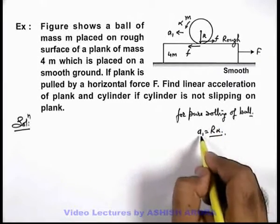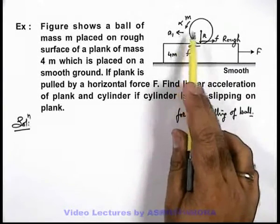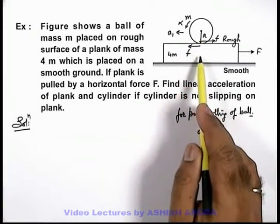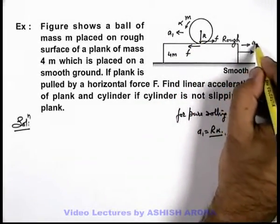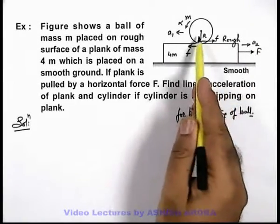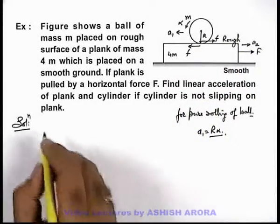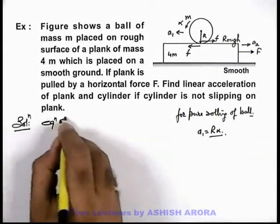Here be careful that as we've taken pure rolling on plank, so a₁ is the acceleration of ball with respect to plank. However, we can take the plank is moving forward with acceleration a₂, so net acceleration of ball in forward direction can be written as a₂ minus a₁. From this equation, if we write equation of motion.